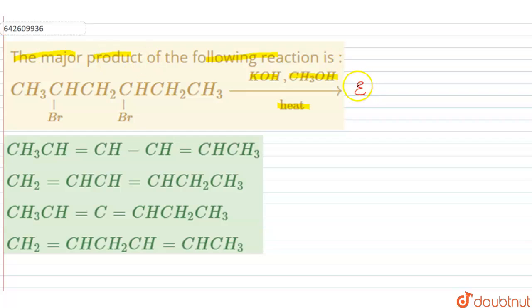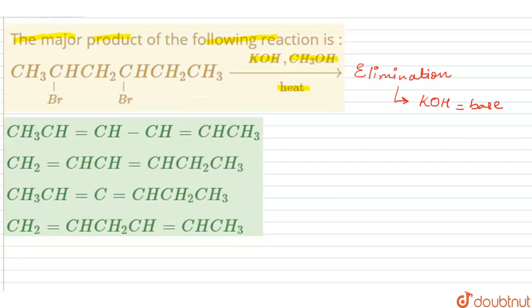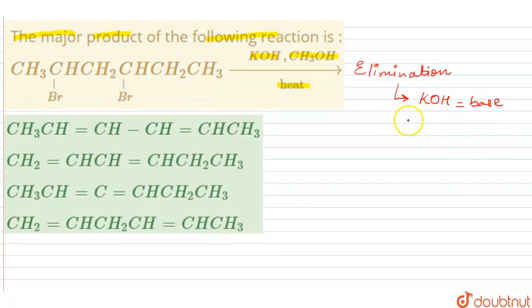Obviously it is of the elimination type because this time we have KOH which will be acting as a base. Since we have an alcohol solvent, CH3OH is a solvent which is going to serve here.